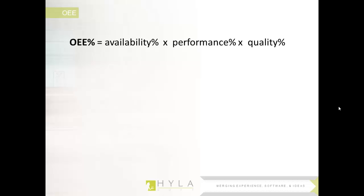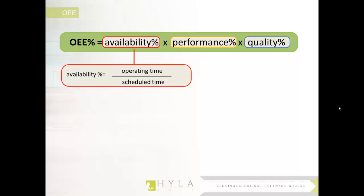OEE is broken down into availability, performance, and quality — this is the industry standard definition. Many companies have their own variables to calculate OEE, but if they truly want the real OEE value, it's these three metrics. The first being availability: your actual operating time over your scheduled time. Scheduled time is what you've planned for that year, quarter, or month that your machines will be up and running, versus what they're actually running — taking into account downtime reasons, stops, maintenance, breakdowns, changeover, startups, and machine jams. All that information is recorded with the downtime management tool.